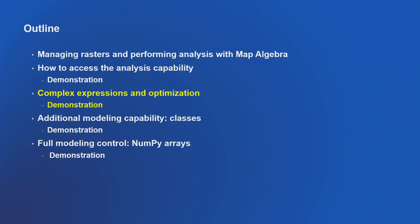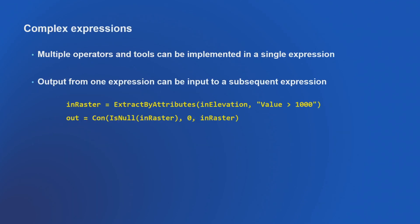Let's start talking about optimization — the more meaty reason you're here. Complex expressions: in a single expression I can do many things and string them together sequentially. Instead of writing each individually, I can input multiple things — take the slope plus five times this — on what's called local functions. A local tool is a per-cell operation. We have local, focal, zonal, and global as our main constructs.